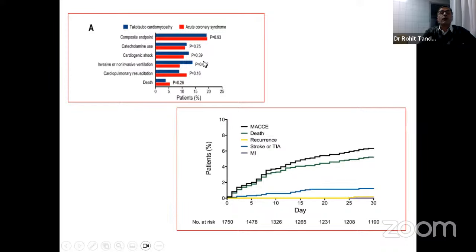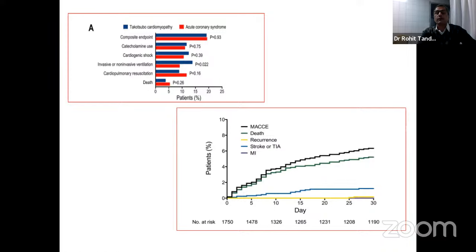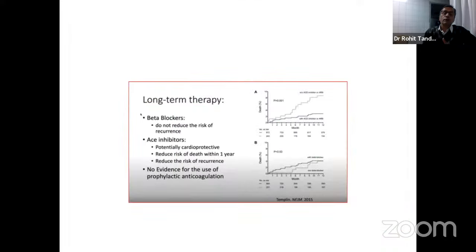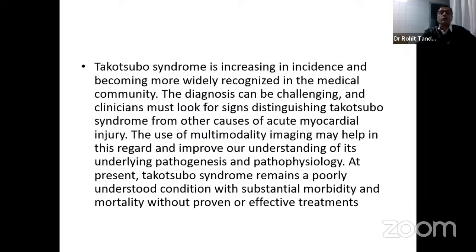The composite endpoint was similar between Takotsubo and ACS, while only mortality differed slightly. The Kaplan-Meier chart for MACE events and stroke/TIA showed that 30-day MACE events and death recurrence remain higher than normal. Long-term beta-blockers may reduce the risk of recurrence and arrhythmias. ACE inhibitors may be potentially cardioprotective, but no study has proven this. In summary, Takotsubo syndrome is increasingly recognized. Diagnosis can be challenging. Clinicians must distinguish Takotsubo from other causes of acute MI, and multimodality imaging is helpful in understanding its pathogenesis.